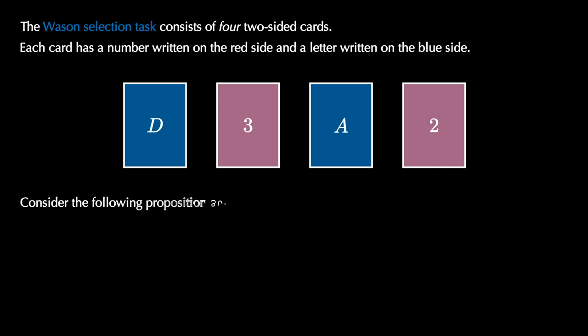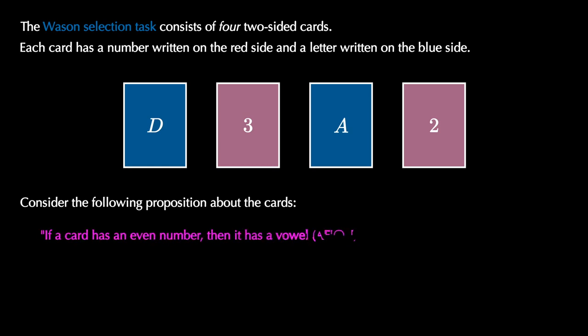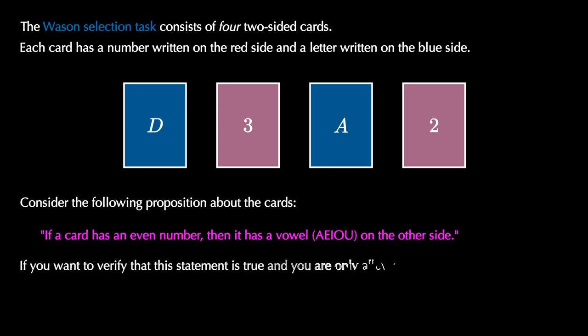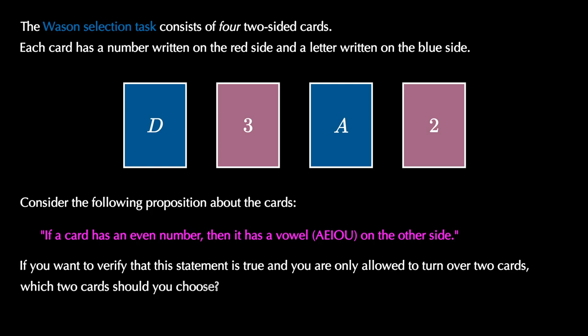Consider a proposition about this set of cards: if a card has an even number on one side, then it will have a vowel on the other side. If we're allowed to verify this statement by only turning over two cards, which two cards should we turn over? Pause the video and think about this for a bit.